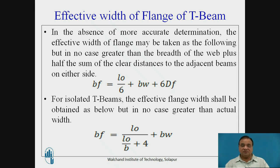For isolated beams, isolated means it is secondary beam. The effective flange width shall be obtained as below but in no case greater than the actual width. So BF is equal to L0 divided by L0 by B plus 4 plus BW.